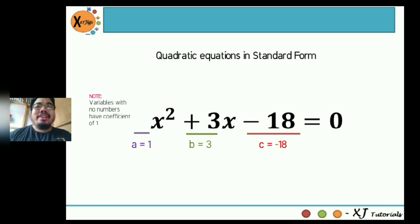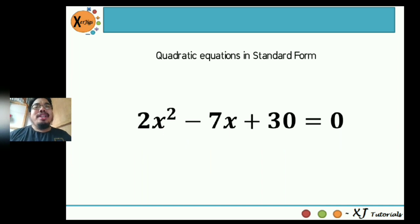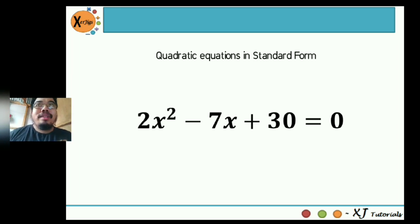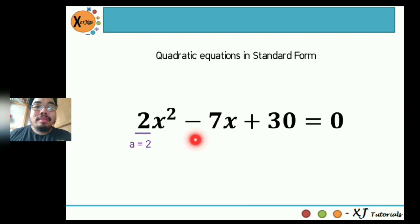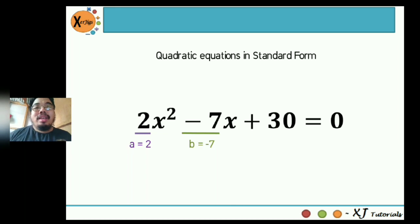So here is another example to practice: 2x squared minus 7x plus 30 is equal to zero. What is the value of a? In the quadratic term, beside x squared, that's positive 2. The value of b, beside x in the linear term, is negative 7. And the value of c in the constant term is positive 30.